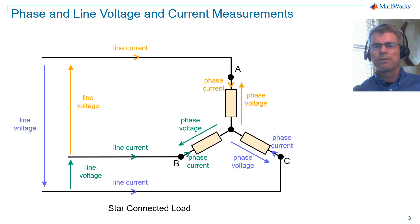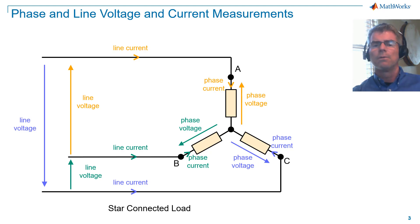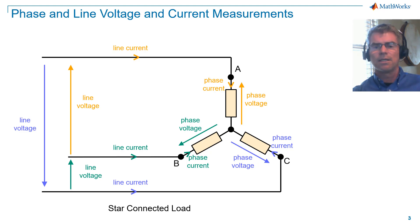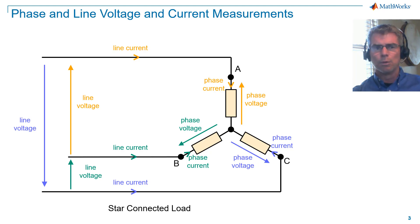Now we'll look at how we measure voltage and current. We have line voltage and current, which are measurements made from the supply lines feeding a load, and phase voltage and current, which are measurements at the components of a load. Line voltage is measured across two lines. Line current is measured through a line. Phase voltage is measured across a load component. Phase current is measured through a load component.